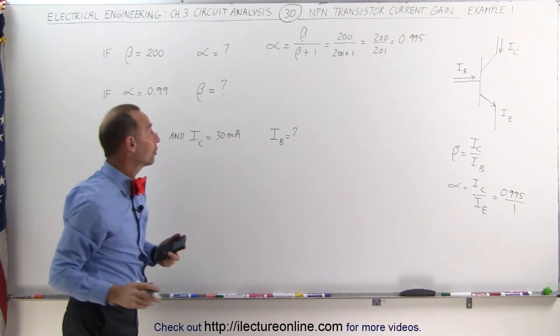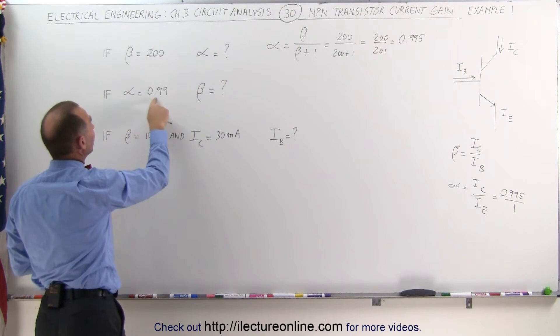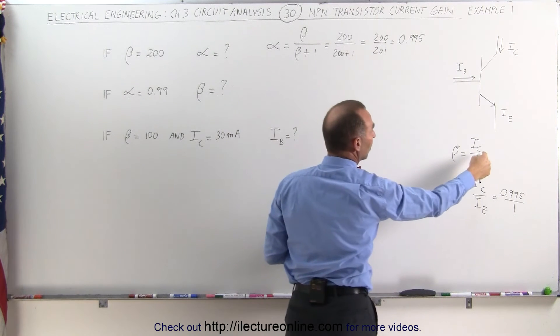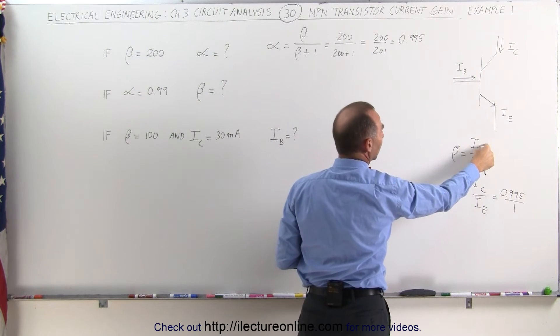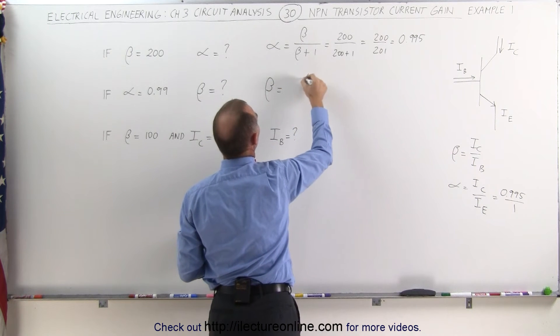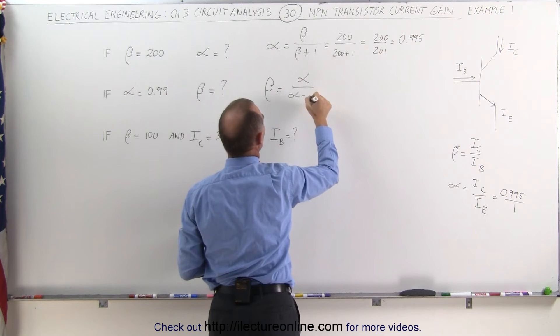All right, now let's go for the second part here. If alpha is 0.99, what is beta? Remember that beta is the ratio between the collector current and the base current. And beta can be defined in terms of alpha as being alpha divided by 1 minus alpha.